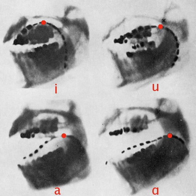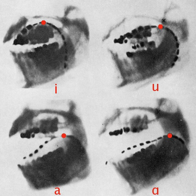Diacritics are used for phonetic detail. They are added to IPA letters to indicate a modification or specification of that letter's normal pronunciation. By being made superscript, any IPA letter may function as a diacritic, conferring elements of its articulation to the base letter. Superscript diacritics placed after a letter are ambiguous between simultaneous modification of the sound and phonetic detail at the end of the sound.